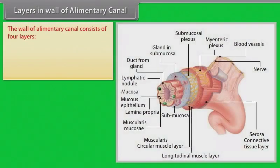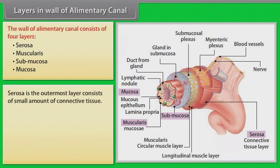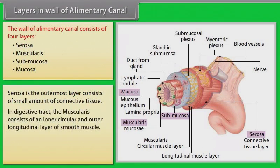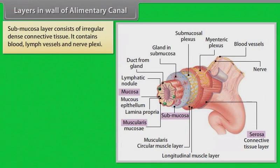The wall of the alimentary canal consists of four layers: serosa, muscularis, submucosa, and mucosa. The serosa is the outermost layer consisting of a small amount of connective tissue. In the digestive tract, the muscularis consists of an inner circular and outer longitudinal layer of smooth muscle — the inner circular layer arranged in a tight spiral and the outer longitudinal layer in a loose spiral. The submucosa consists of irregular dense connective tissue containing blood vessels, lymph vessels, and nerve plexuses.